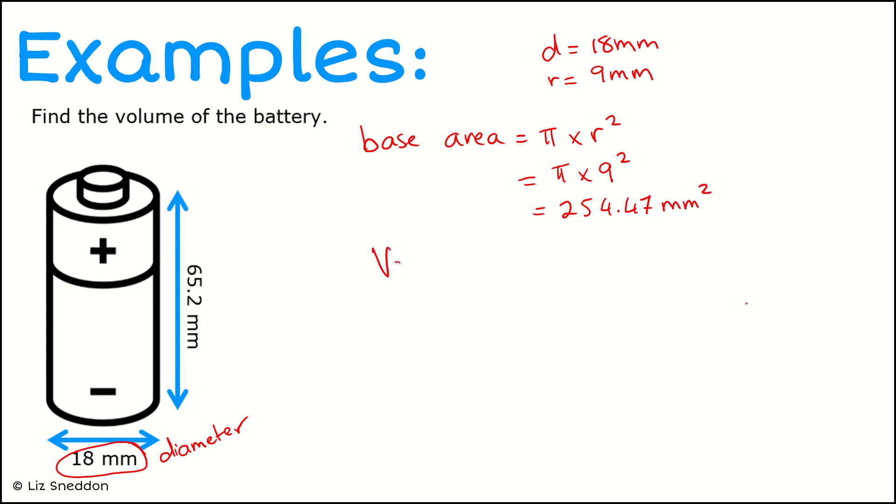Now I'm going to find the volume, and the volume is equal to the base area multiplied by the height. So my base area is 254.47 millimeters squared, and I'm going to multiply that by the height of 65.2 millimeters. That's going to give me a volume of 16,591.38 millimeters cubed.